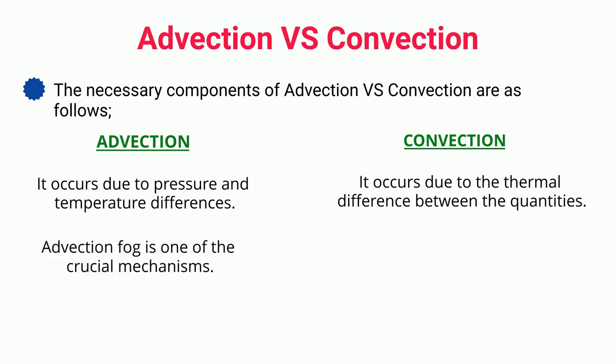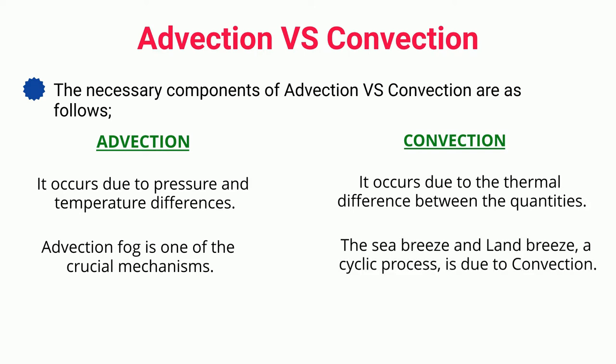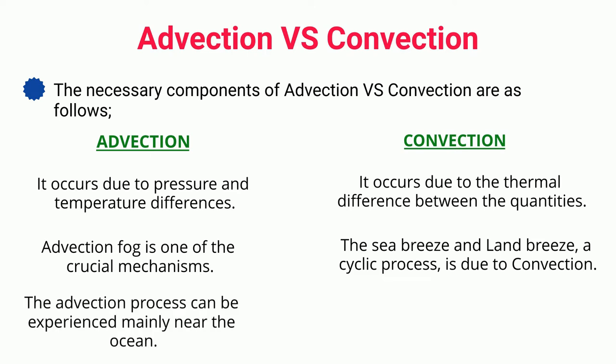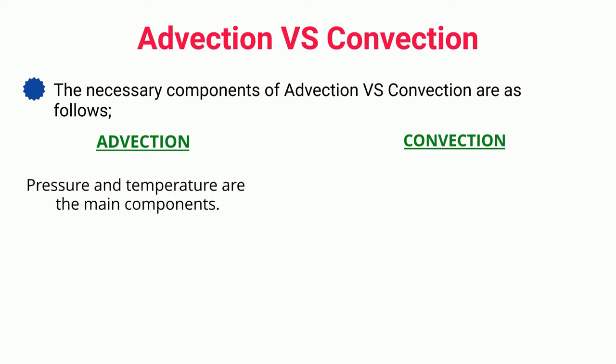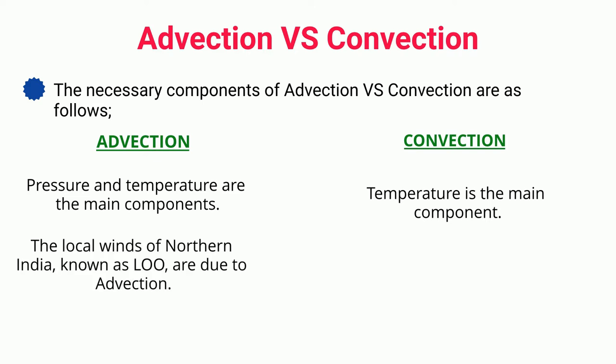Advection fog is one of the crucial mechanisms. The sea breeze and land breeze, a cyclic process, is due to convection. The advection process can be experienced mainly near the ocean, while the convection process can be experienced in all the appliances that work on heat. Pressure and temperature are the main components of advection; temperature is the main component of convection. The local winds of northern India, known as LOO, are due to advection.